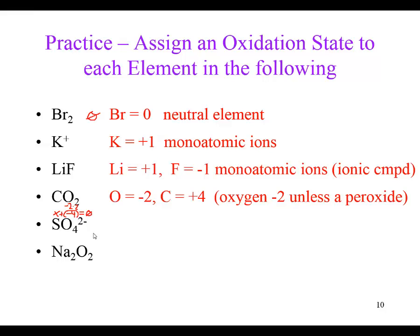Now if I have a polyatomic ion, we use similar rules but add up to the charge on the polyatomic ion instead of zero. For the sulfate ion SO₄²⁻ with a charge of two minus, oxygen should be a negative two times four oxygens giving a total of negative eight. Plus the unknown oxidation number for sulfur, it should all add up to a negative two.